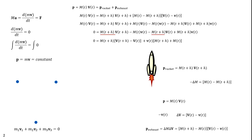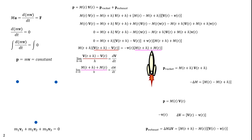We combine terms: each term multiplied by m(t+h) is grouped together, and each term multiplied by V(t) is grouped together. We then move m(t+h)·[V(t+h) − V(t)] to the left side of the equation, divide both sides by h, and take the limit as h approaches zero. The limit of [V(t+h) − V(t)]/h is dV/dt, and the limit of [m(t+h) − m(t)]/h is dm/dt. That results in m(t)·dV/dt = −v(t)·dm/dt.